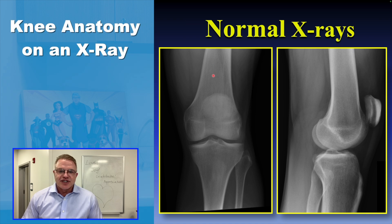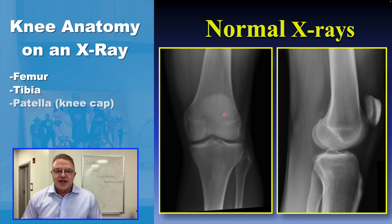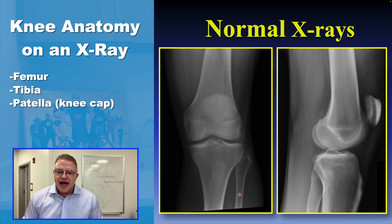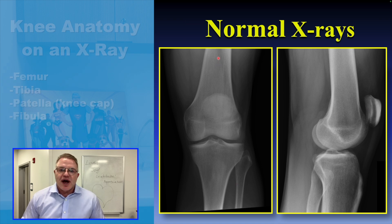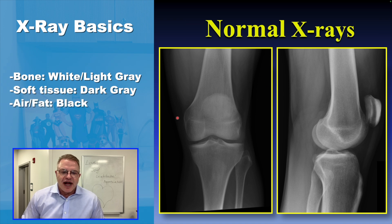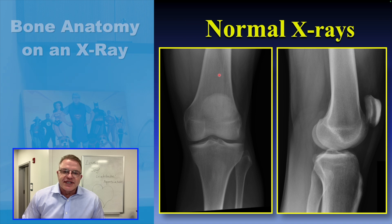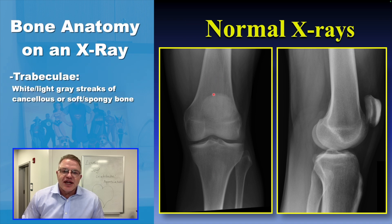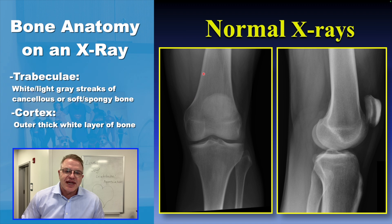This is a lateral x-ray. This is our femur, this is our tibia, and this is our kneecap or patella. Same thing here from the side view — femur, tibia, patella. The small bone in the leg is the fibula. On an x-ray, bone itself appears white or very light gray, and the soft tissues around it, the muscle tissues, are a little bit darker gray. Air and fat appear black. You can see little trabeculae, which are tiny lines in the bone — that's the normal soft bone in the center. And we have the hard outer cortex, which is this thick white line that goes down the inside and outside of the bone.